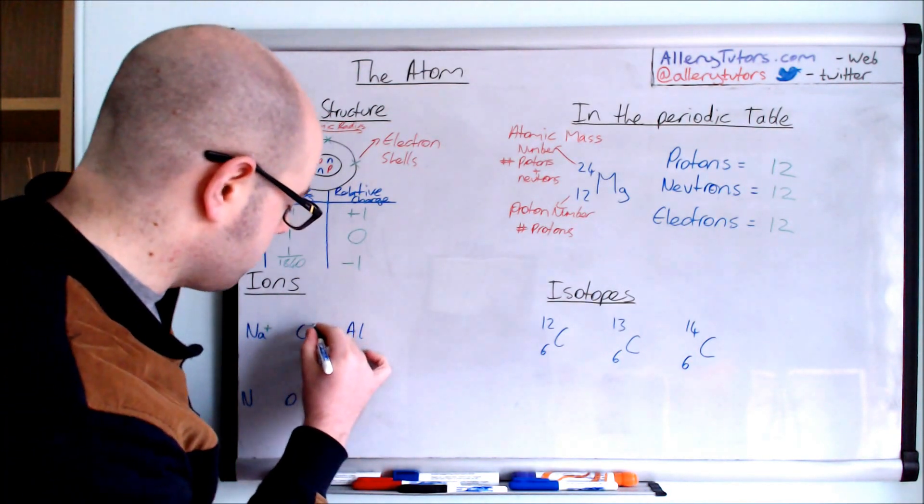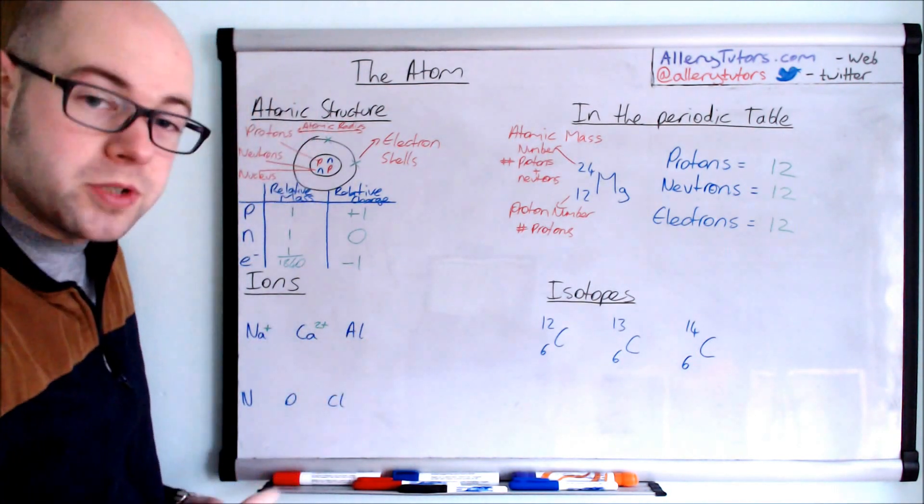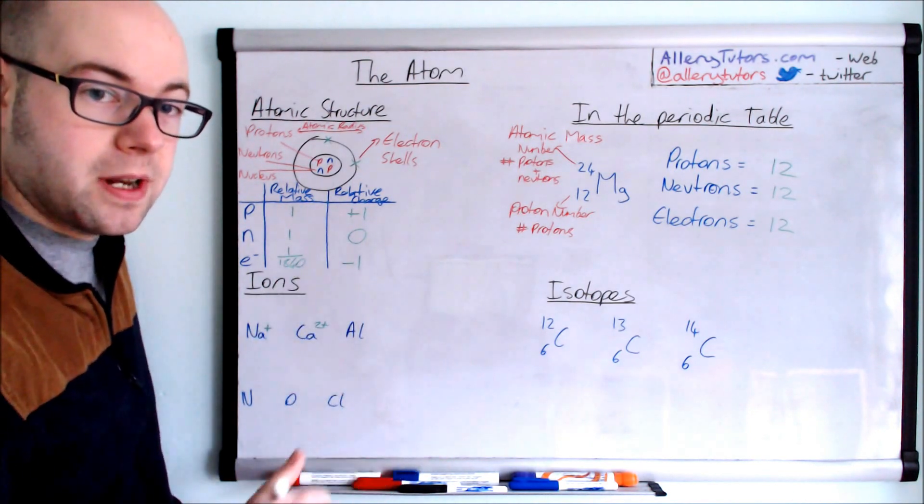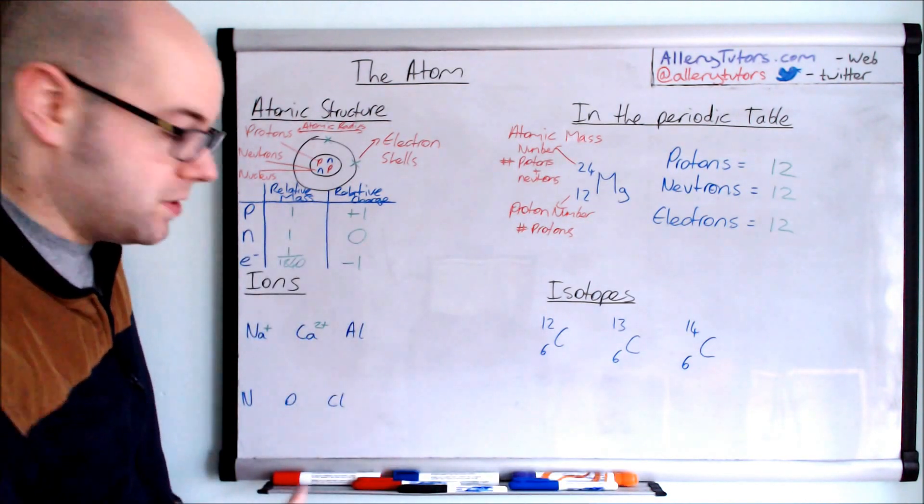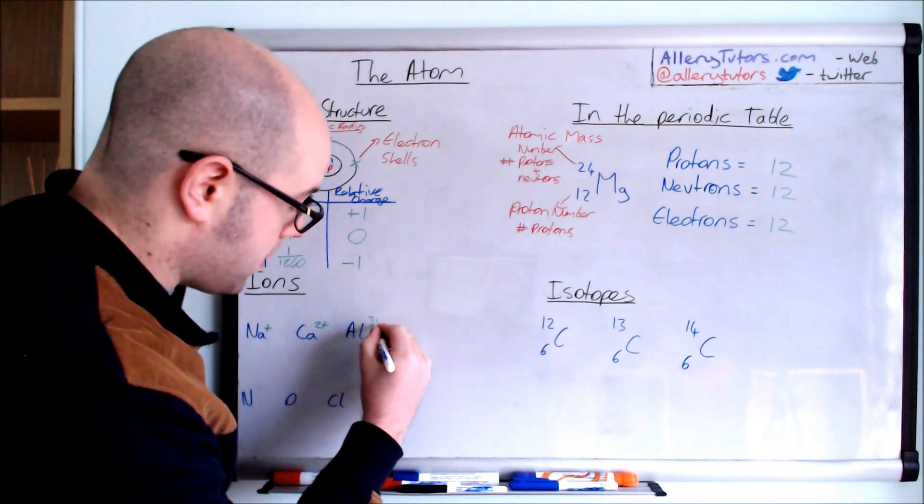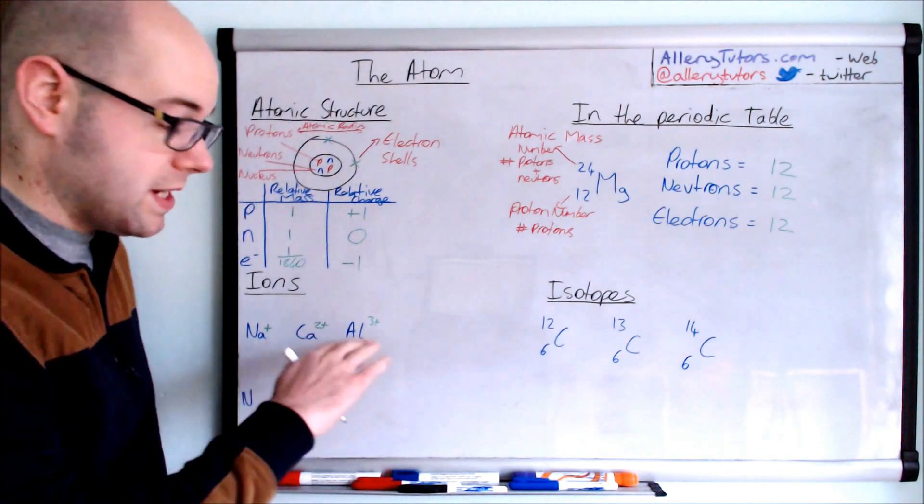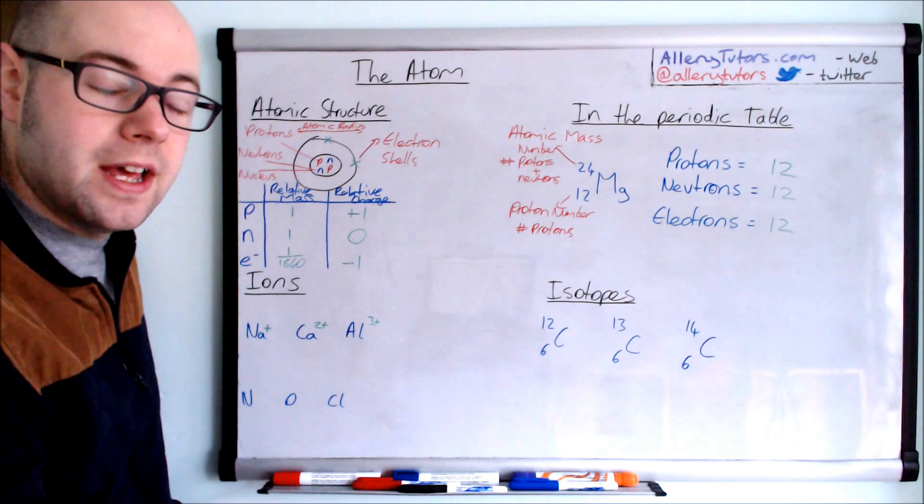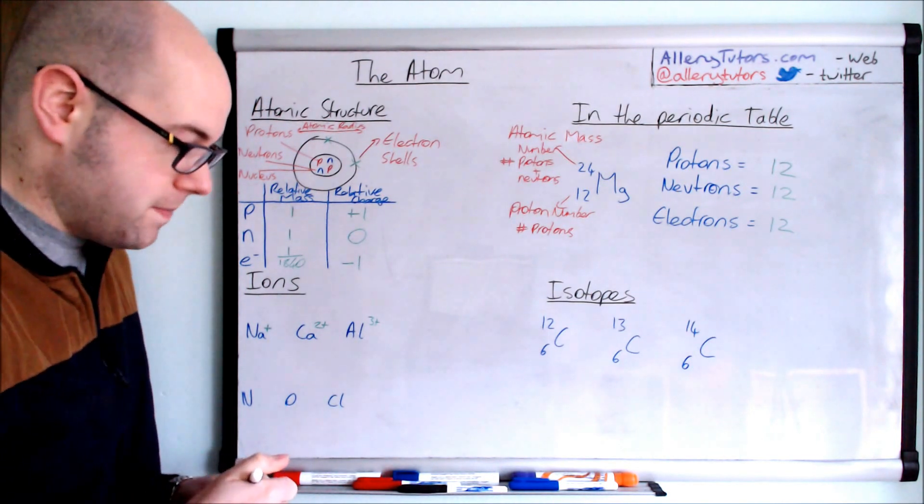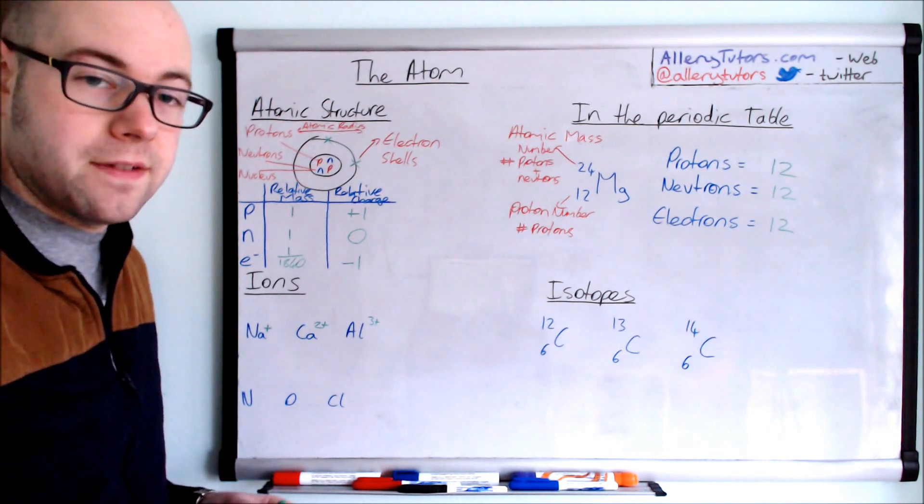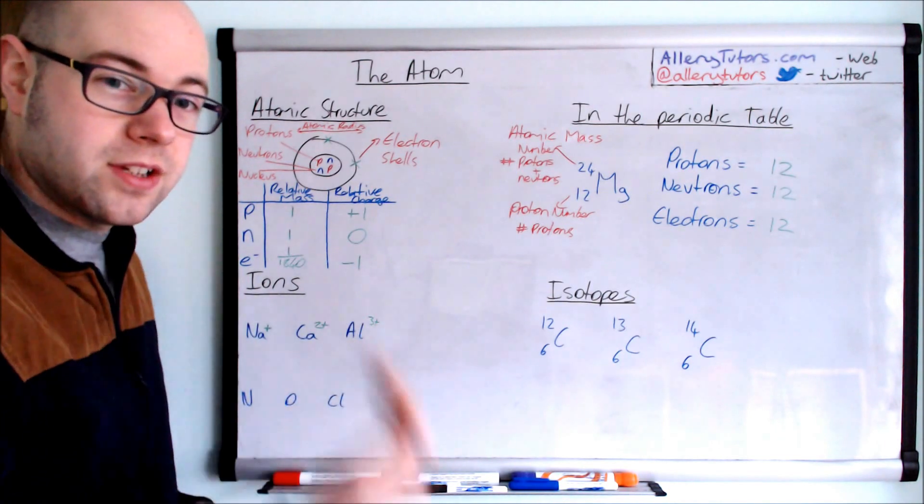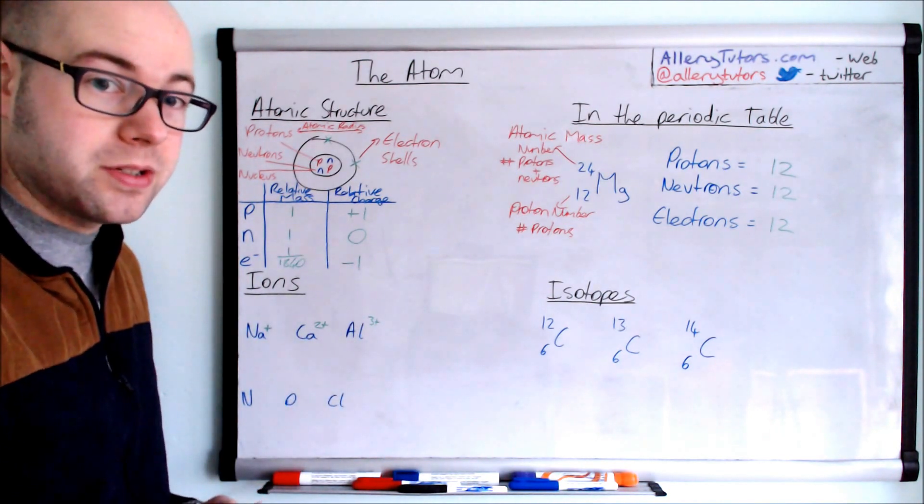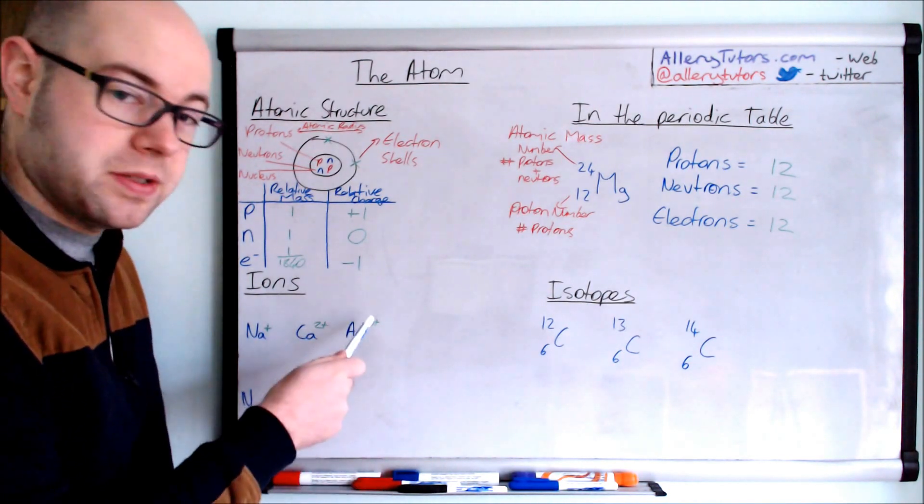If we go along to the next group along, which is aluminum, this is in group three. So it forms a three plus electron. Again, it's easier for this atom to lose three electrons than it is to gain the five electrons that it needs to get a full shell. So it loses. And so what's left behind is a positively charged ion. That's why these have positive charges.